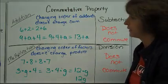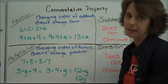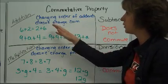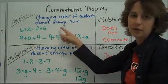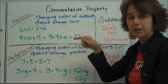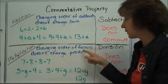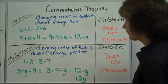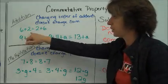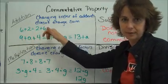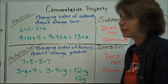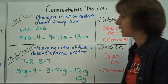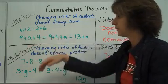The commutative property of addition and the commutative property of multiplication. The commutative property of addition says you can change the addends and you don't change the sum. The commutative property of multiplication says change the order of the factors and you don't change the product. For example, 6 plus 2 is the same as 2 plus 6. When you were in elementary school your teacher probably had you change it to 6 plus 2 so you could count up, knowing that those were the same.